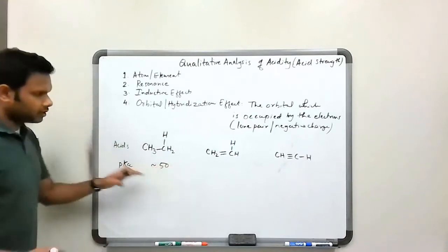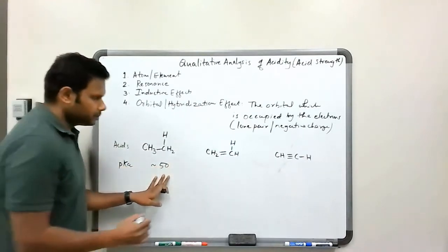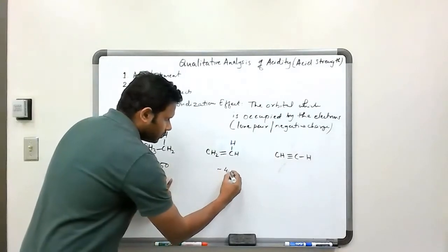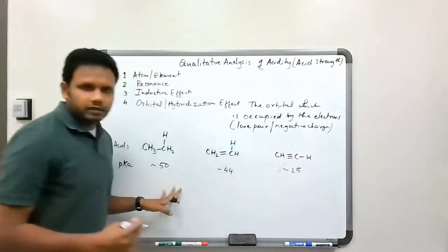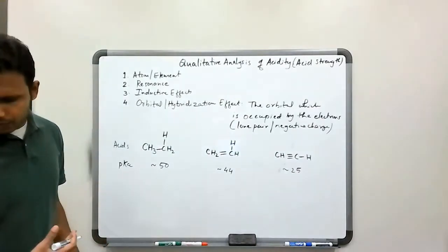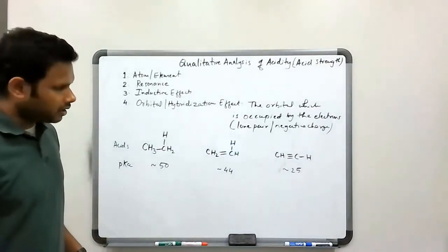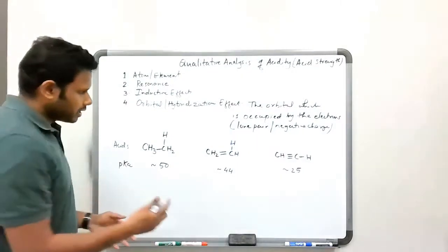Again, approximate pKa values. That's about 50. This is around 44 or so, and this is around 25. So those are some approximate numbers for our pKa values that we have.